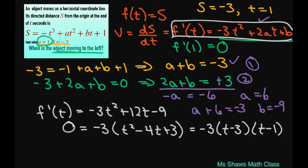We set this to 0 again like we did before. We get t equals 3 or t equals 1. Let's see what we get for that. If f'(t) is negative 3 times (t minus 3) times (t minus 1), I'm going to set up a sign diagram and see what we get.